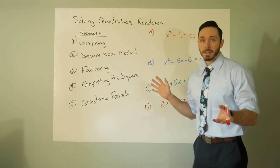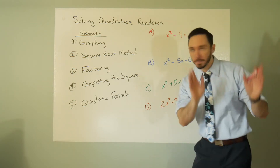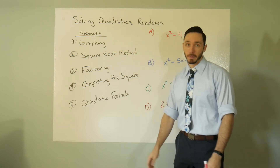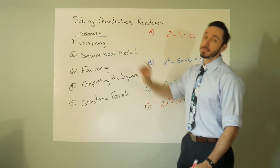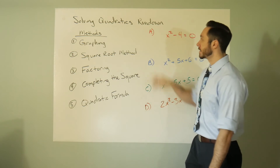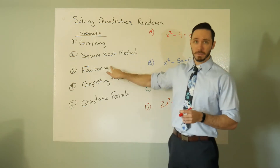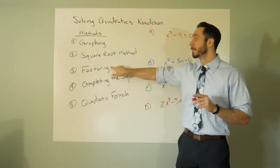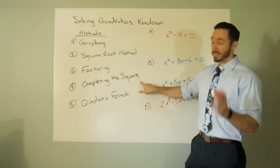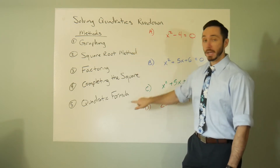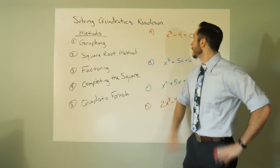Solving quadratics is a fun unit in algebra 2 or honors algebra 1. There are a lot of different methods: graphing can be a little annoying without a graphing calculator; the square root method is nice but doesn't always work; factoring is great when you can do it but doesn't always work; completing the square is more reliable; and the quadratic formula is the most reliable of them all.